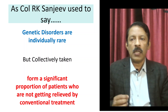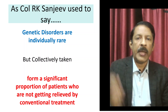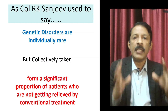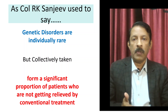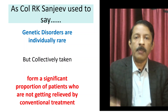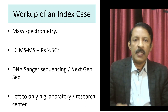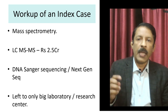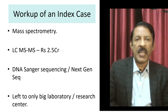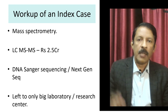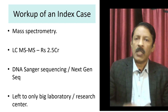I had a good friend, Colonel R.K. Sanjeev, a pediatrician, who used to say that genetic disorders individually are very rare, but when you look at them collectively they form a sizable chunk of patients who are not being treated properly — and it is up to us to do something for these patients. When we talk about a workup of an index case, the first thing that comes to mind is mass spectrometry — MSMS or LC-MSMS — costing 2.5 crores. If you want to do genetic workup, you need next-gen sequencing or a single sequencer, taking your budget up to 1.5 to 2.5 crores, way beyond the scope of any normal lab. That's why nobody is doing anything about it.